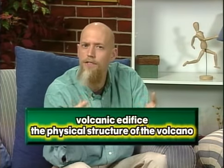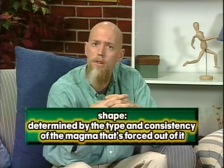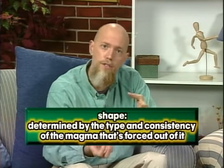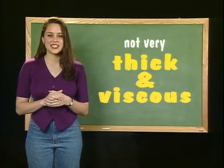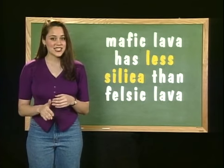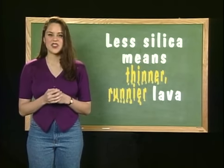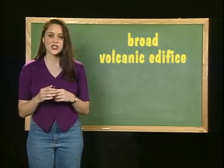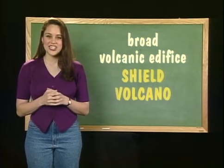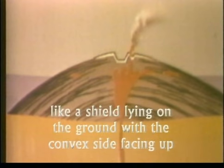A volcanic edifice is the physical structure of the volcano — its shape and how it's formed. The shape is determined by the type and consistency of the magma forced out of it. Basaltic lava, another term for mafic lava, isn't very thick and viscous. When runny basaltic lava comes out of a volcano, it spreads out in thin layers, producing a broad volcanic edifice called a shield volcano. Shield volcanoes are low and rounded, like a shield lying on the ground with the convex side facing up.